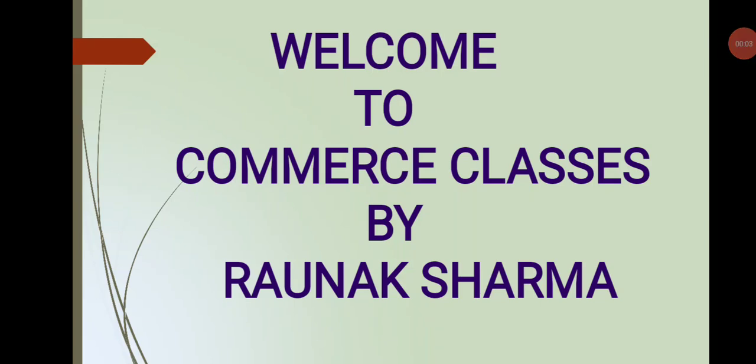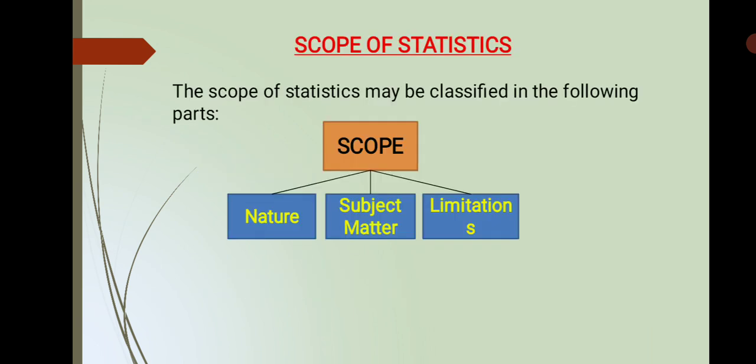Greetings to all and welcome back to Commerce Classes by Ronak Sharma. In the previous lecture we discussed the features of statistics in singular sense, and today we are going to discuss the scope of statistics. The scope of statistics may be classified into the following parts: first, nature; second, subject matter; and third, limitations. In today's lecture we will discuss nature and subject matter, and limitations will be covered in the next lecture.